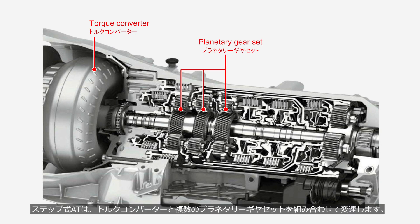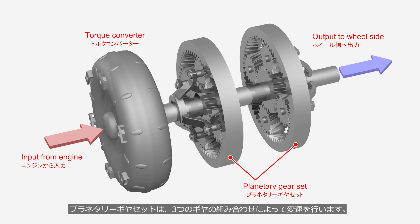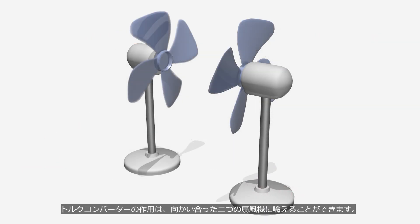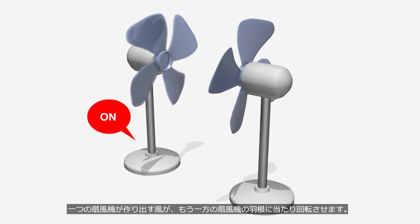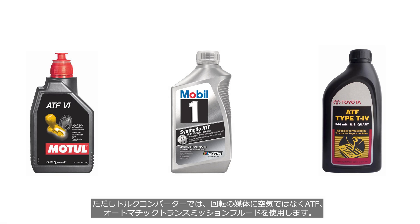A step-type automatic transmission shifts gears by combining a torque converter with multiple planetary gear sets. A torque converter is installed between the engine and shifting mechanism and functions as a torque amplification device or a launch device. Planetary gear sets shift the gear through the combination of three gears. The function of a torque converter can be likened to two electric fans facing each other, but in a torque converter, ATF (automatic transmission fluid) is used as the medium for rotation instead of air.